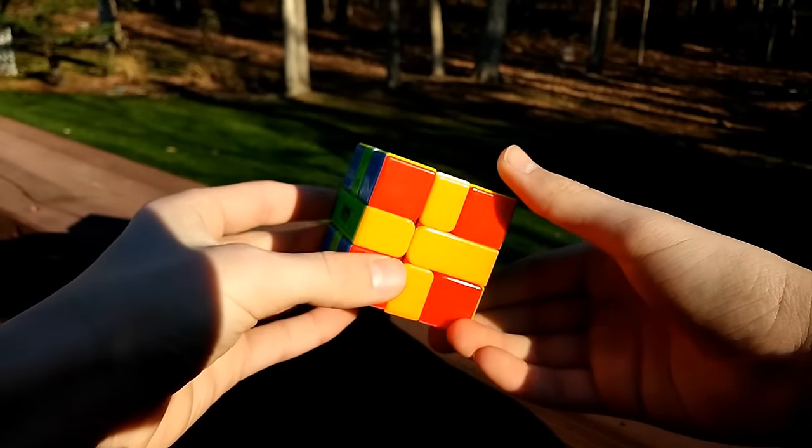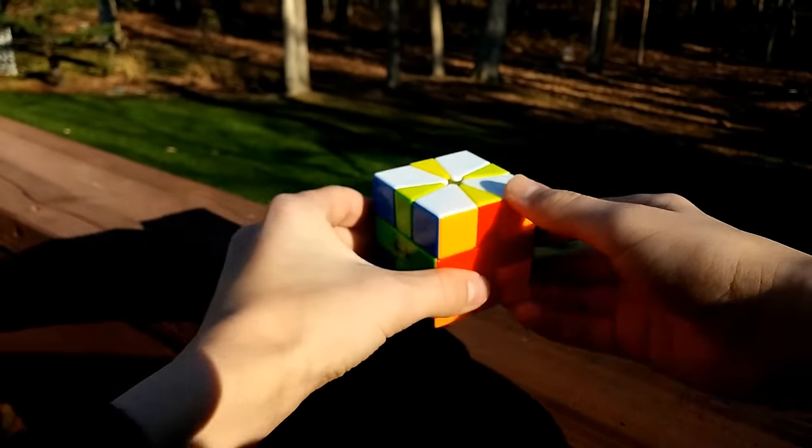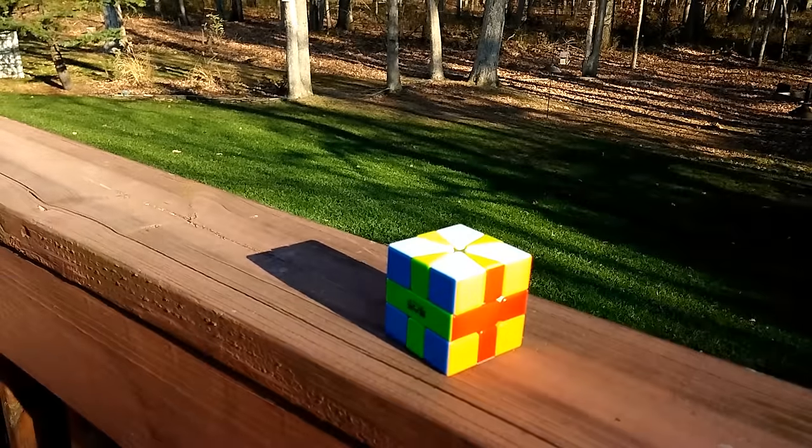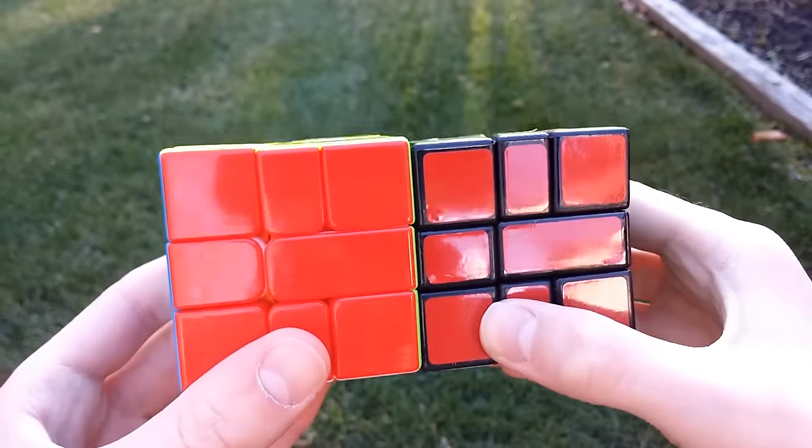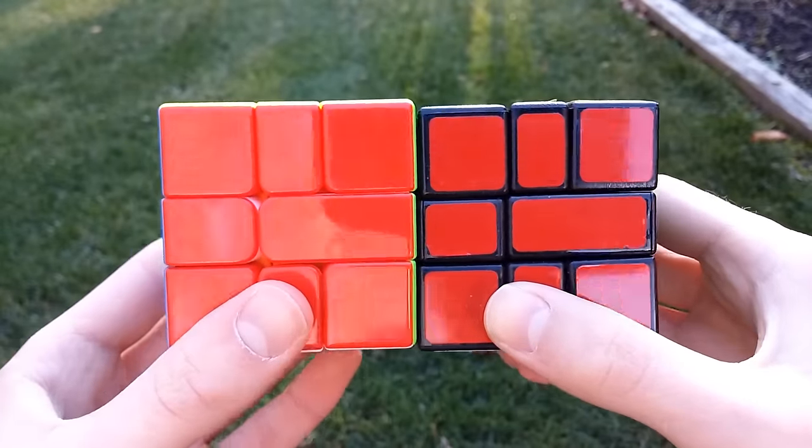I chose to get mine in stickerless, and the shades are nice and easily recognizable. Most of them are pretty vibrant as well, which I do like. It's 55mm in size, which is on point with the other Square Ones on the market.